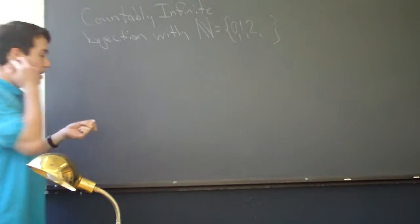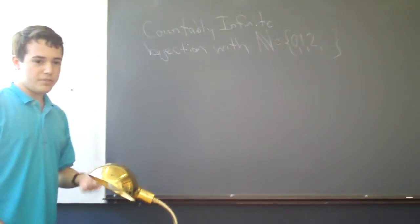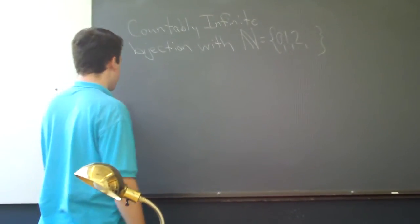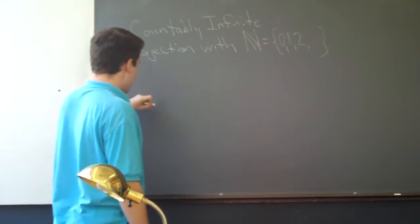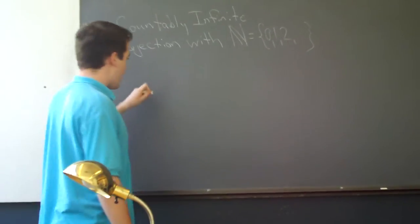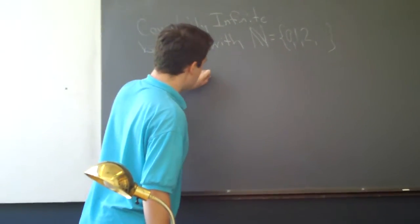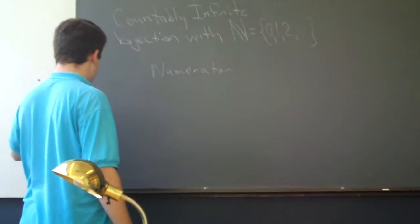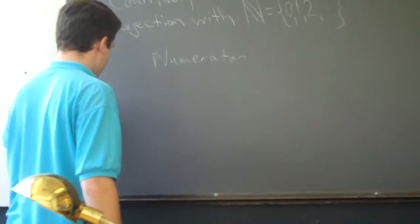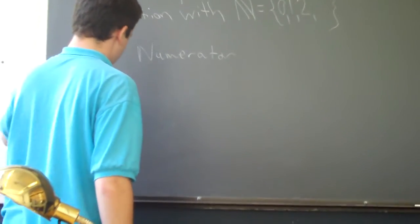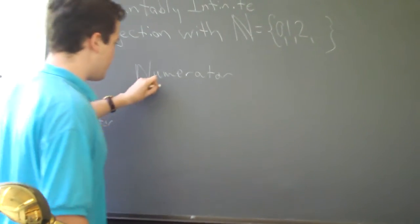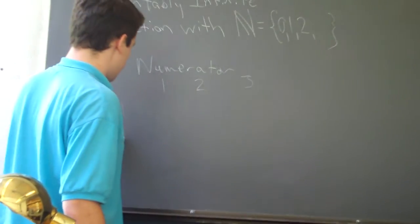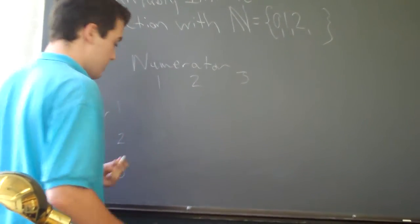Part 2 is to prove that the rational numbers, as represented by infinite decimals, are countably infinite. We can take the rational numbers and list them diagonally by putting the numerators across the top and the denominators down the side, as 1, 2, 3, and so on, and 1, 2, 3, and so on.